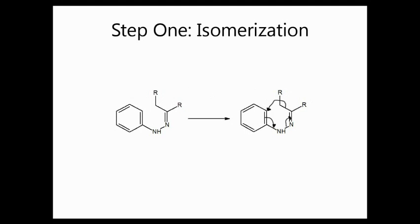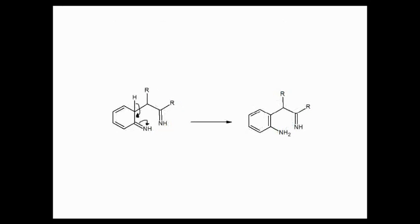Step 1 of the reaction involves an isomerization of the enamine. Here a double bond forms and a hydrogen is added to the amine on the ring.